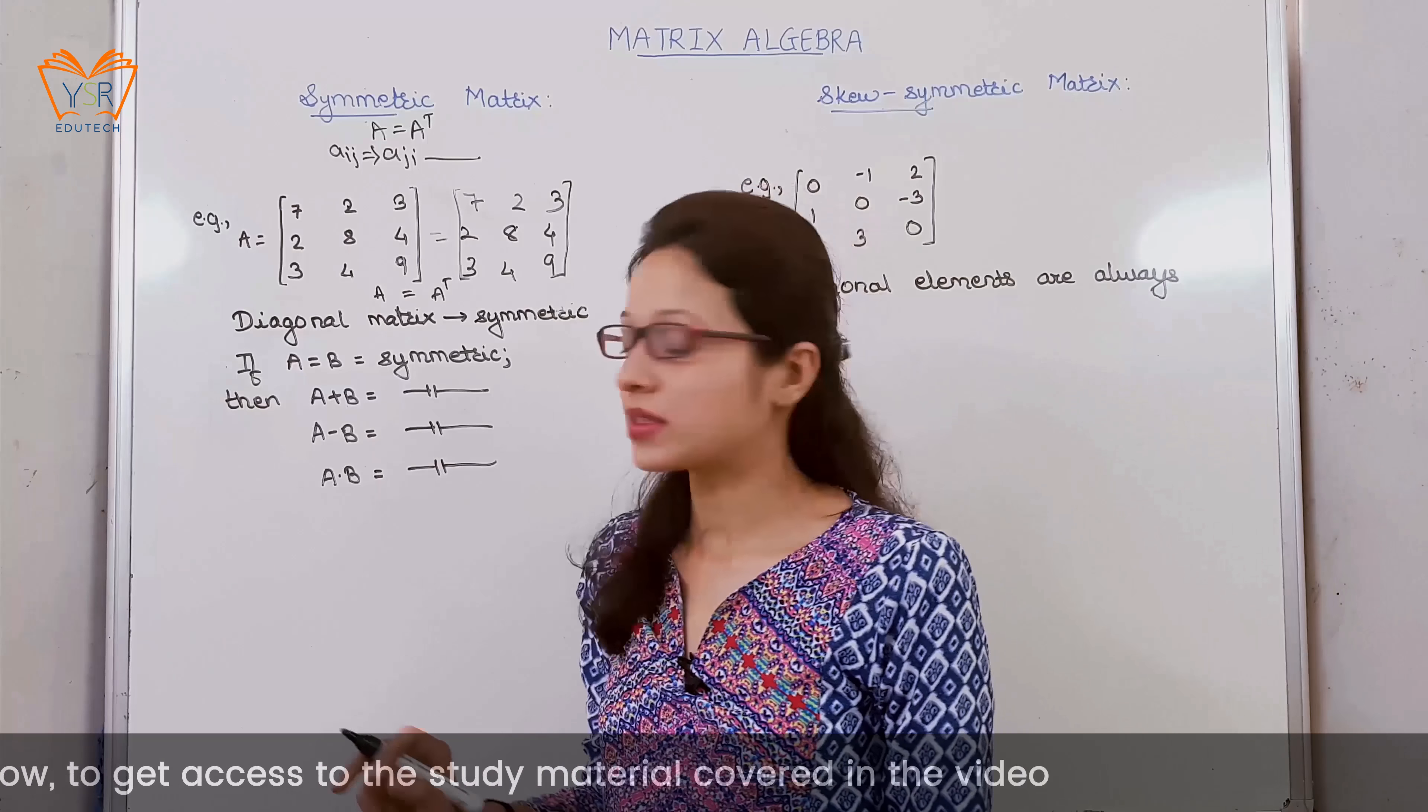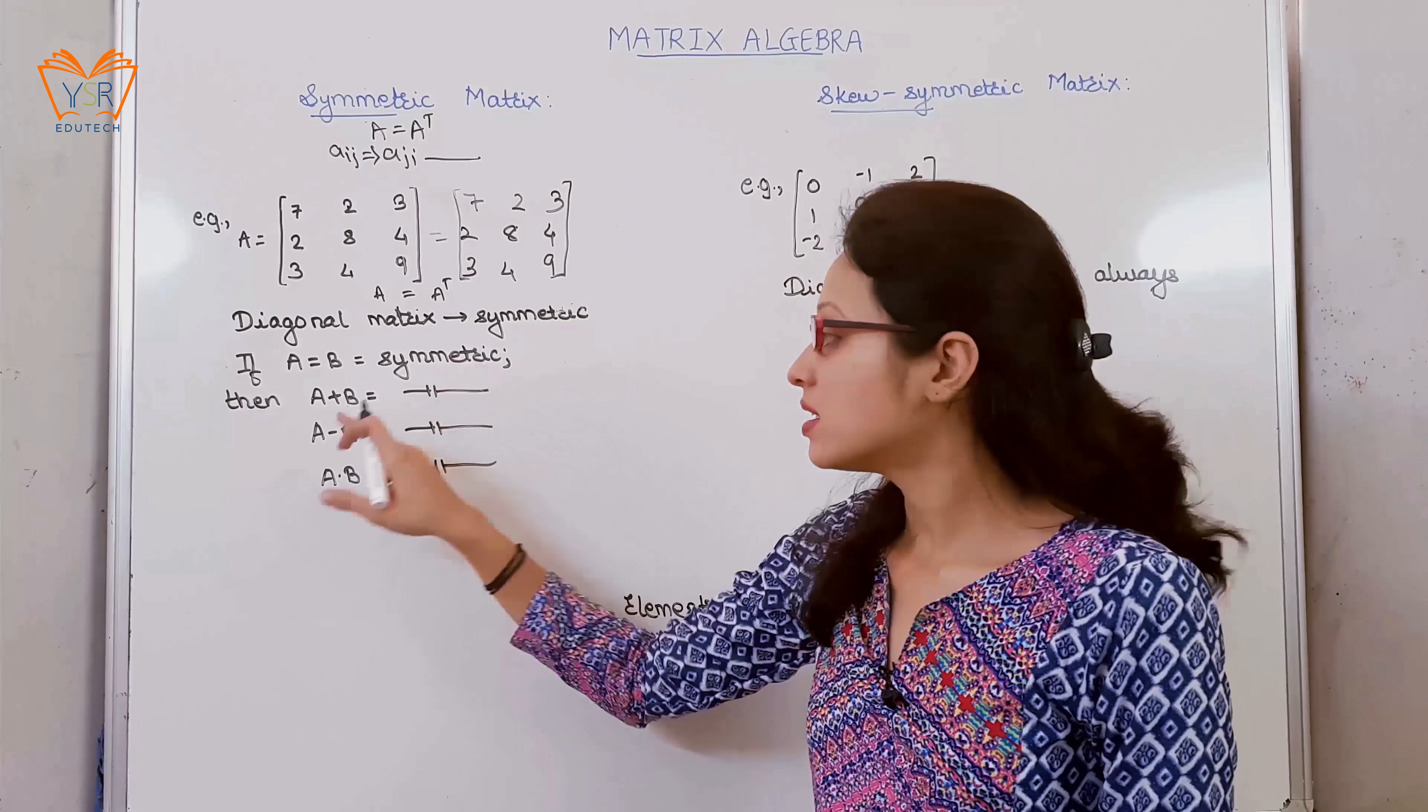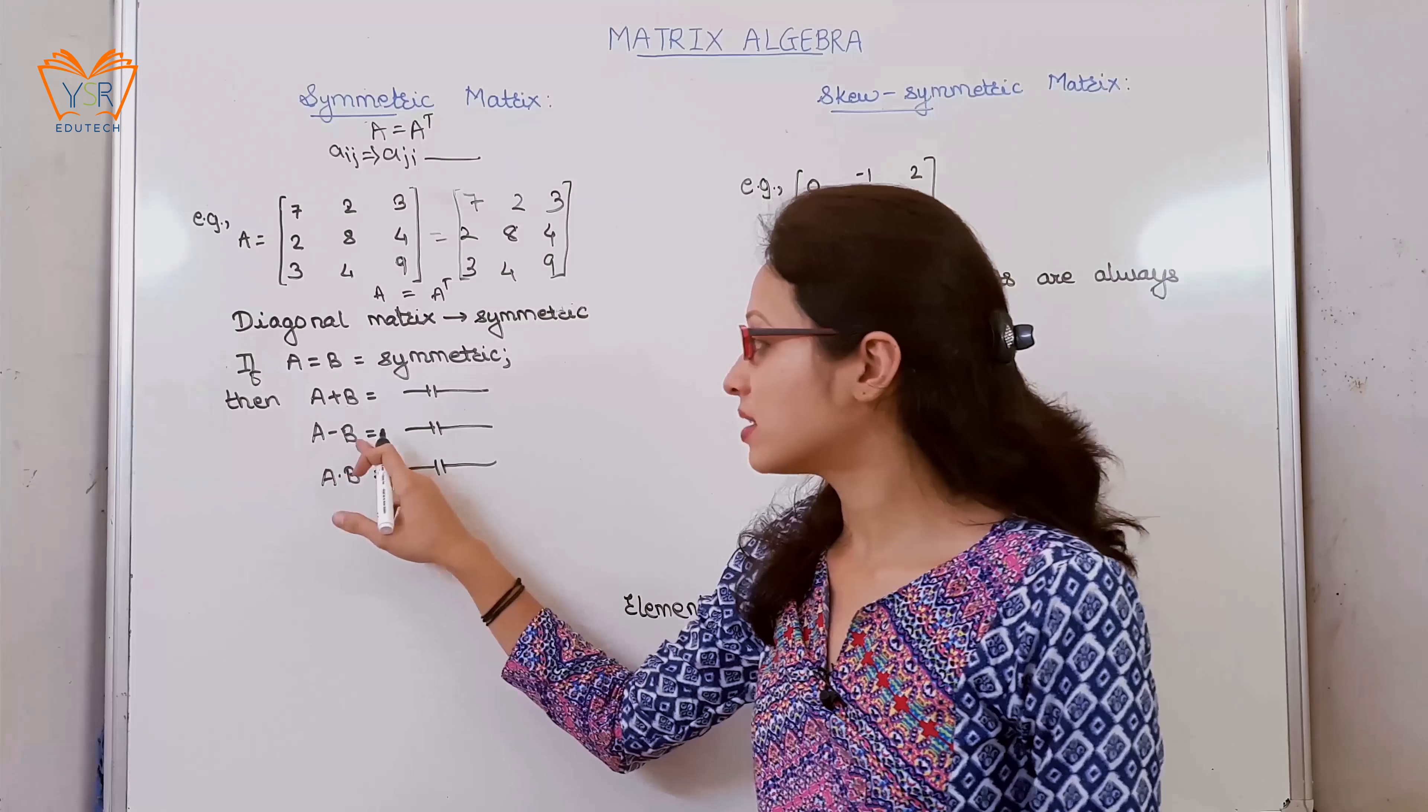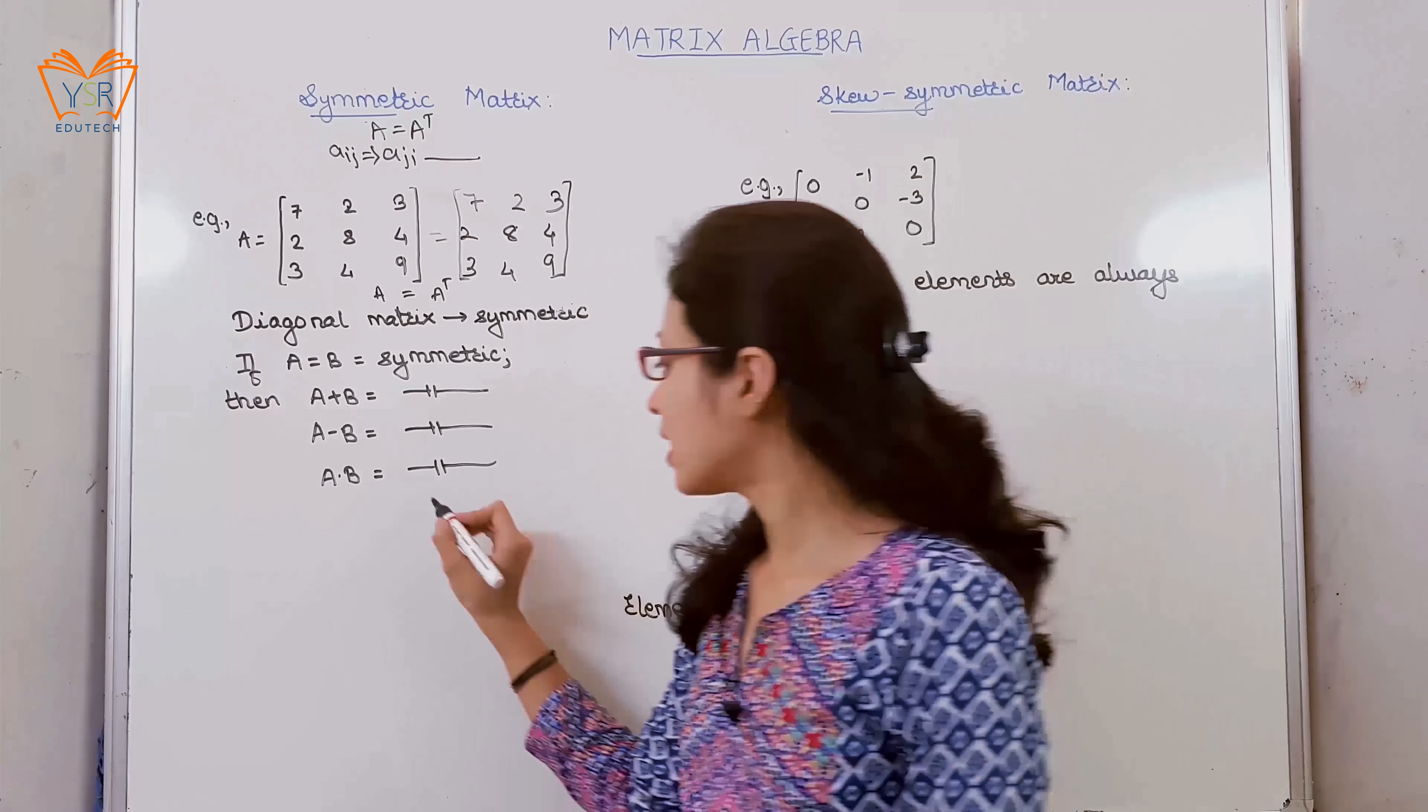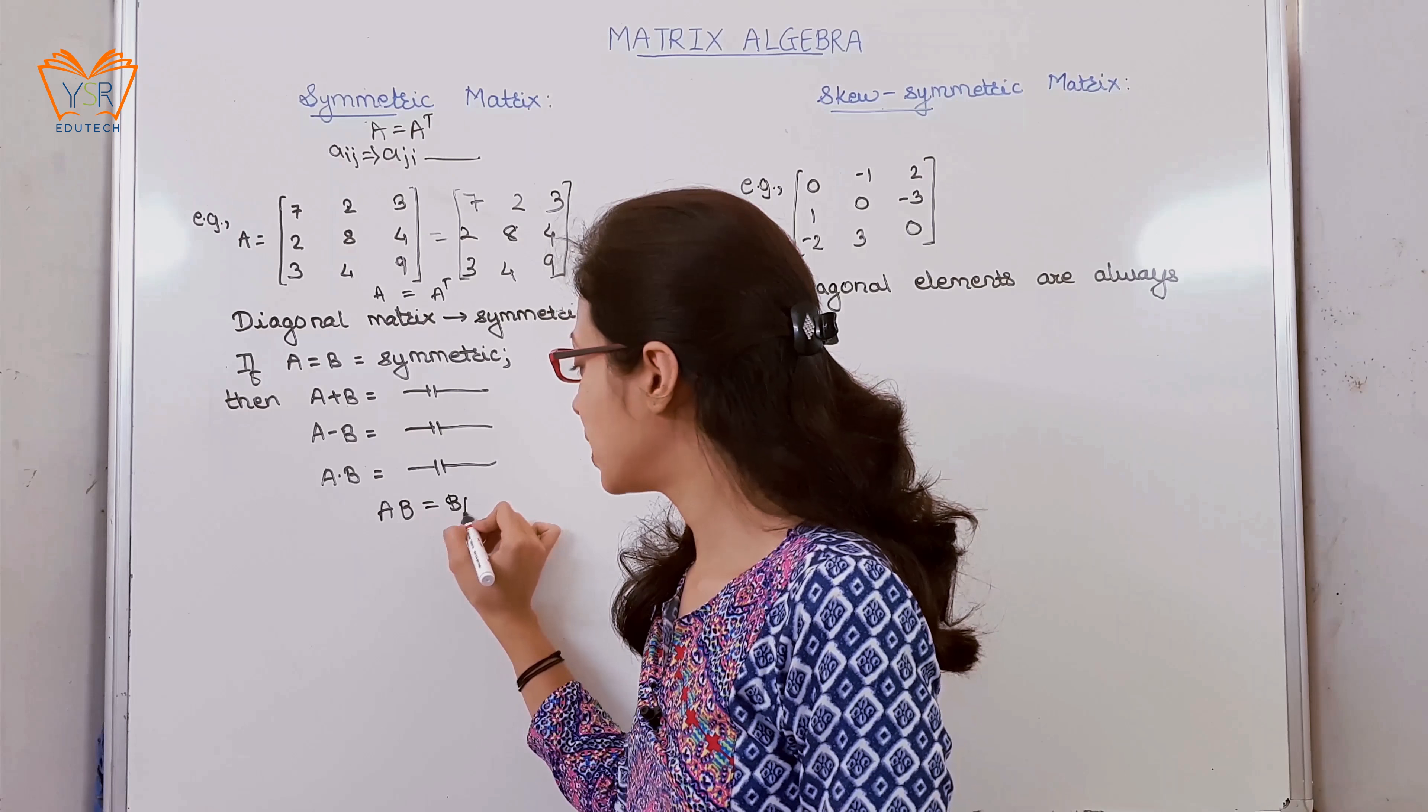Properties of symmetric matrix: If A and B both are symmetric matrices, the sum A + B is also symmetric, also the difference A - B is symmetric. The product is said to be symmetric only when A and B commute, that is AB is equal to BA.